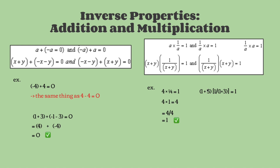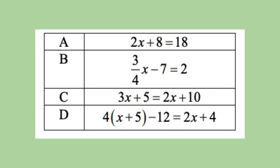Next, we'll take it up a notch using this equation, and still substituting x as 1 and y as 3. So our equation is (1 plus 3) times 1 over (1 plus 3) equals 1. 1 plus 3 is equal to 4, and 1 over (1 plus 3) is equal to one-fourth. So it's 4 times one-fourth, which equals 4 over 4, which is equal to 1. So this checks out.